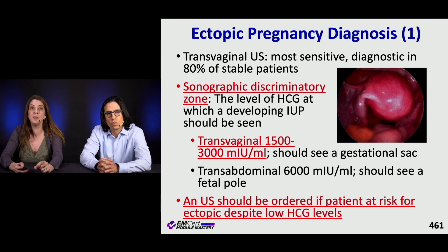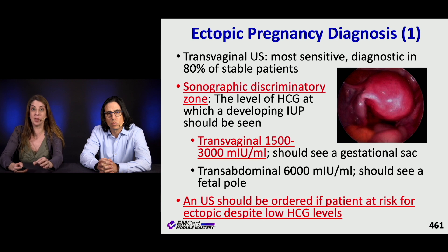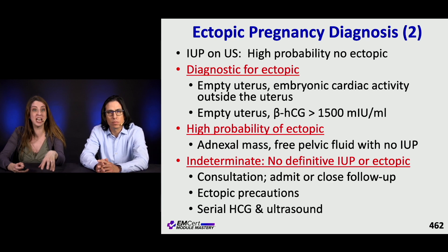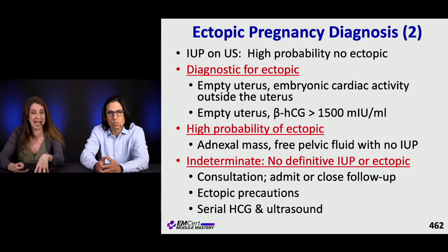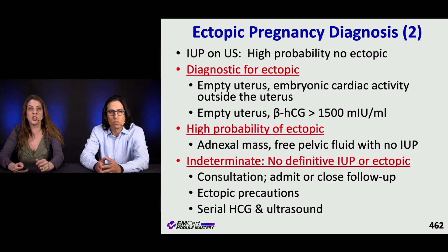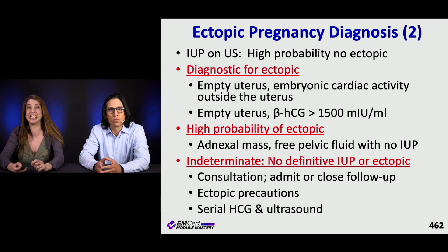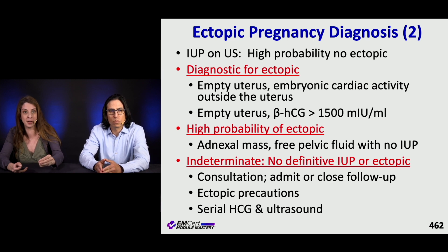Transabdominal ultrasound has a higher discriminatory zone at 6,000. Even if the HCG is below the discriminatory zone, if you're worried about an ectopic, you still get the ultrasound. If there's an IUP on ultrasound, there's a high probability it is not an ectopic. The exception is patients on fertility medication, who are at risk for heterotopic pregnancies — a pregnancy both inside and outside the uterus. Diagnostic findings for ectopic include an empty uterus with embryonic cardiac activity outside the uterus, or an empty uterus with beta-HCG greater than 1,500.